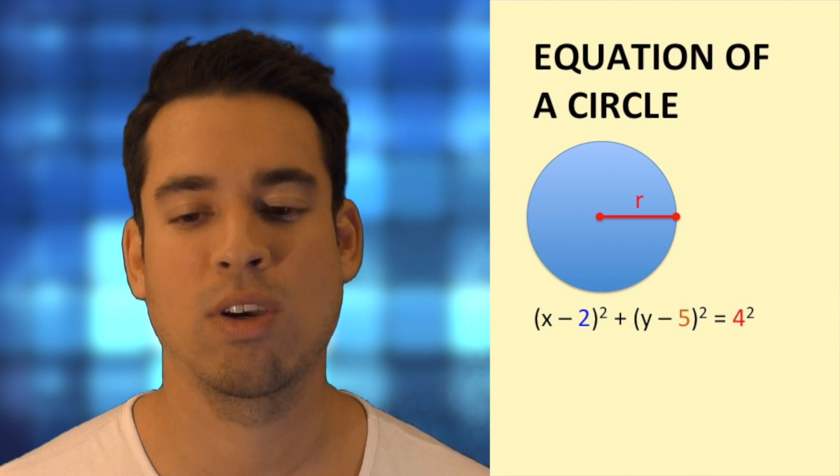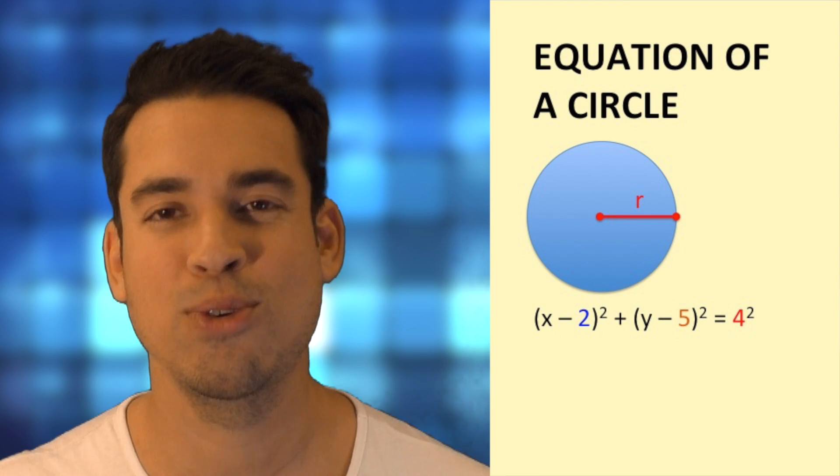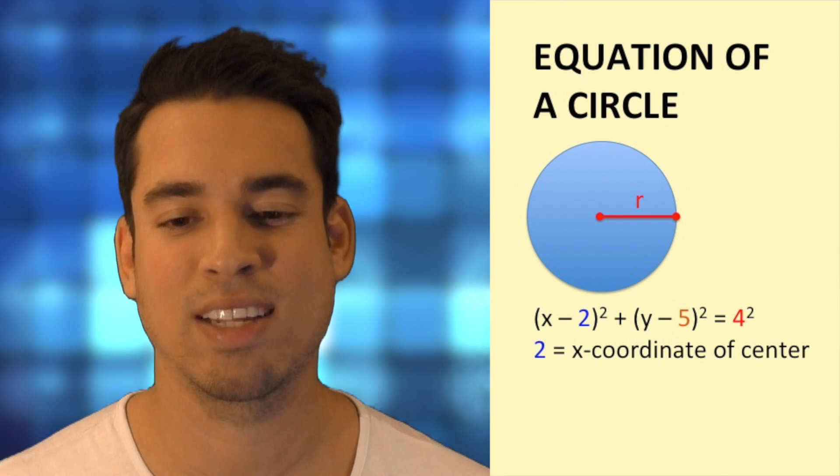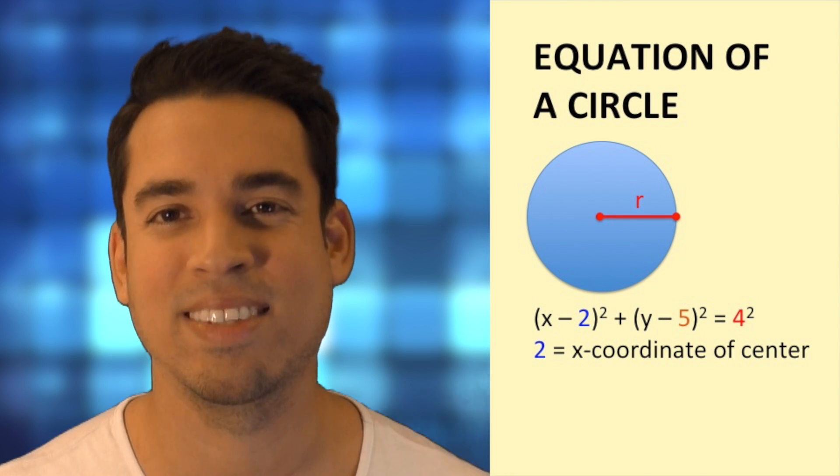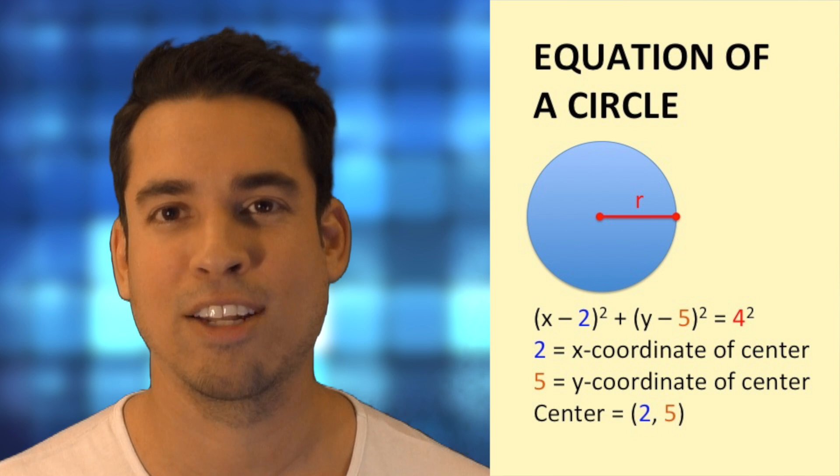Next, what is the value of the x coordinate of the center? Well, since we have x minus 2, the center is at the x coordinate of 2, and then we have y minus 5, so the y coordinate of the center is 5. So we have our center right there at 2, 5.